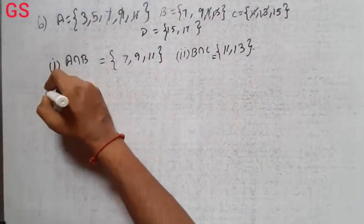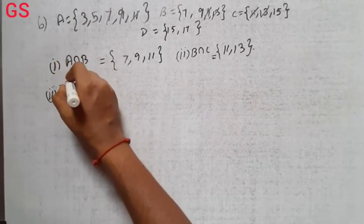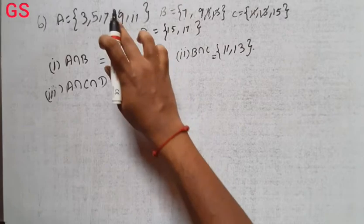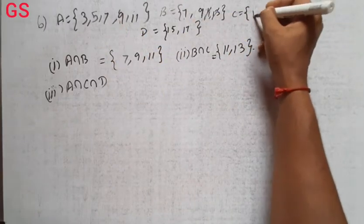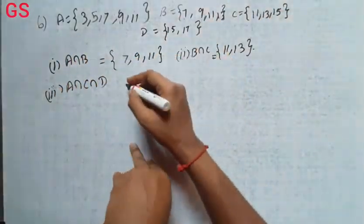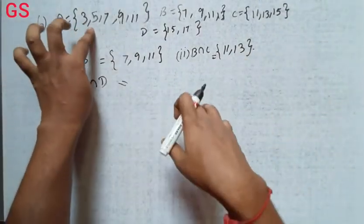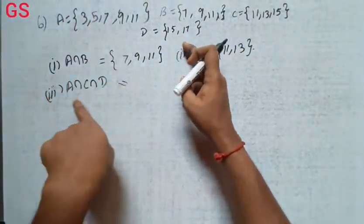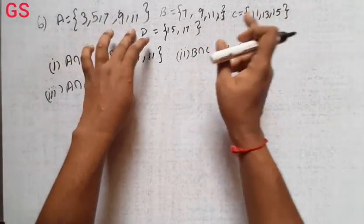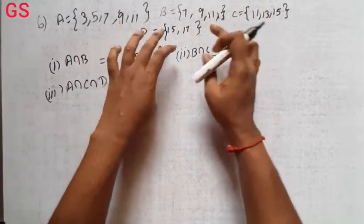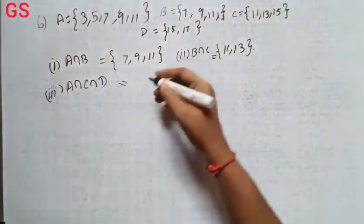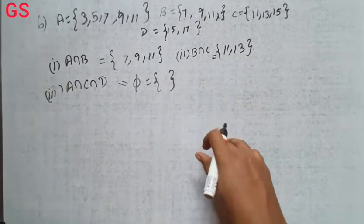Third subdivision is A intersection C intersection D. In A there is 3, 5, 7, 9, 11. In C there is 11, 13, 15. In D there is 15, 17. Common in all three is nothing, so empty set is equal to phi. One of them is not common, so the third one is empty.